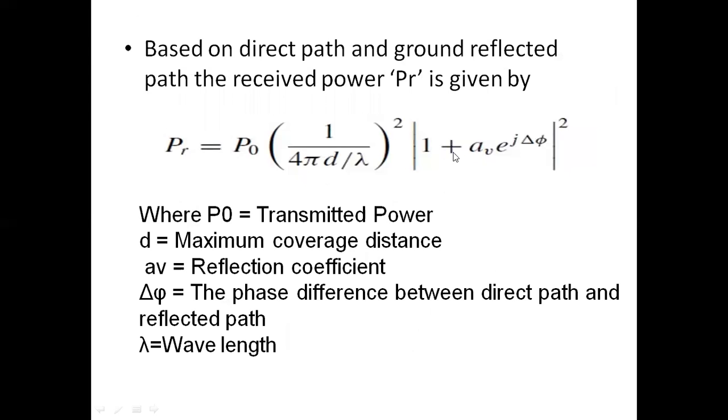We know that e^(jθ) = cosθ + j·sinθ. Substituting Av = -1 into the equation, the received power becomes: Pr = P0 · (1/(4π · D/λ))² · |1 - (cos Δφ + j·sin Δφ)|², which gives Pr = P0 · (1/(4π · D/λ))² · |1 - cos Δφ - j·sin Δφ|².